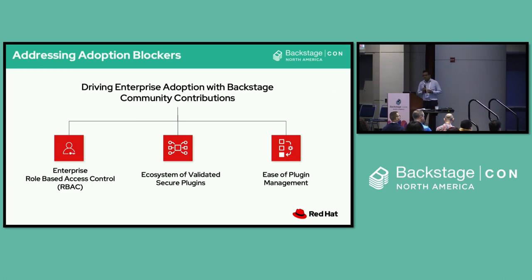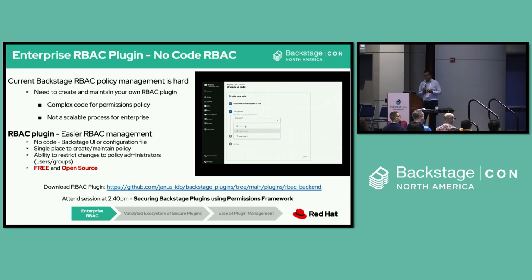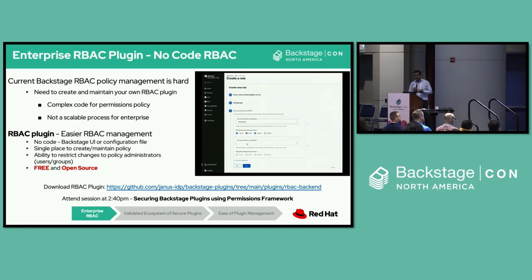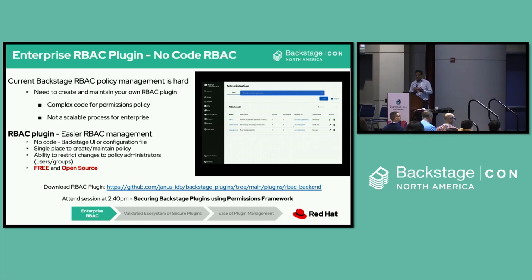For most enterprises, Backstage's default access for everyone just doesn't cut it. Backstage's permission framework requires creating and maintaining an RBAC plugin involving significant coding and ongoing maintenance work — not exactly the most scalable way for an enterprise. So, introducing Red Hat's RBAC plugin: we have simplified the game, allowing you to define roles, assign groups to those roles, and manage access permissions without having to write any complex code.